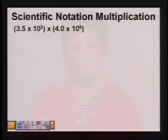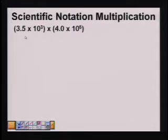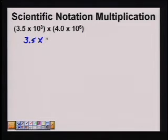Let's look at some examples. We're going to multiply scientific notation numbers. We have two scientific notation numbers here to multiply. We start by multiplying the first number in each of the scientific notation numbers together — that's 3.5 times 4.0, which equals 14.